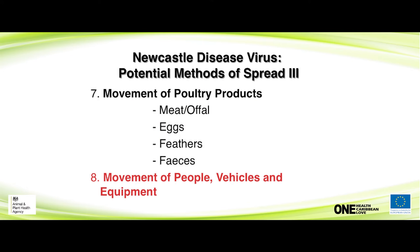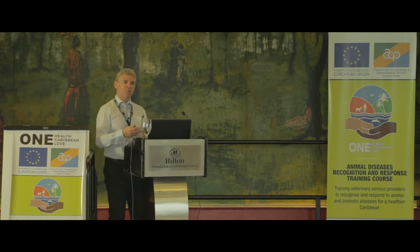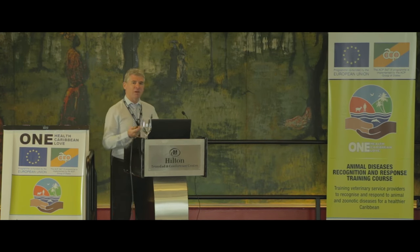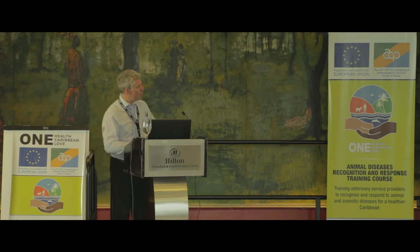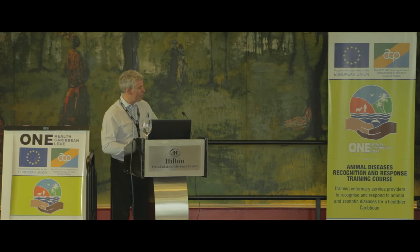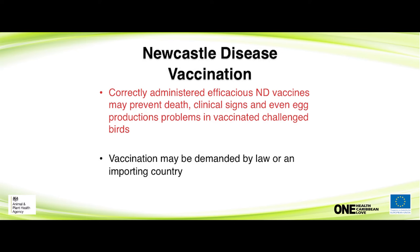Control depends on area and policy — it might be through slaughter, or relying on vaccination to keep infection down where it's not perceived as a major problem. Where there's heavy vaccination, the virulent virus can become endemic. ND vaccines are probably the best veterinary vaccines available. They've been around for decades and they do the job — when applied properly they can prevent death, clinical signs, and reduce egg problems. Some trading partners actually demand that a country vaccinates.